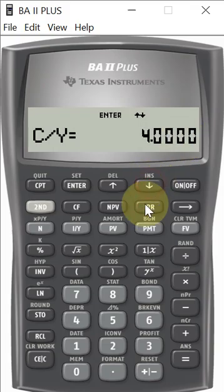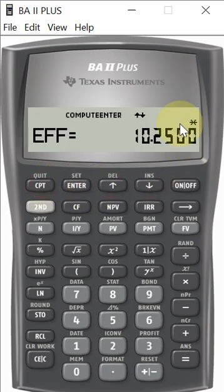And lastly, let's say we wanted to do semi-annual compounding. We would do 2, enter, and then recompute that again.